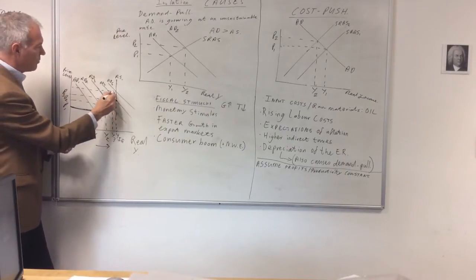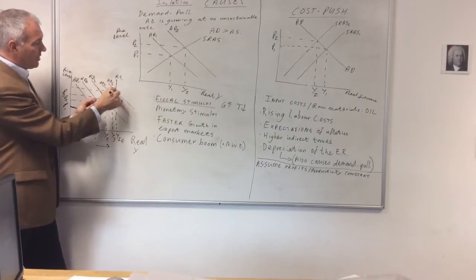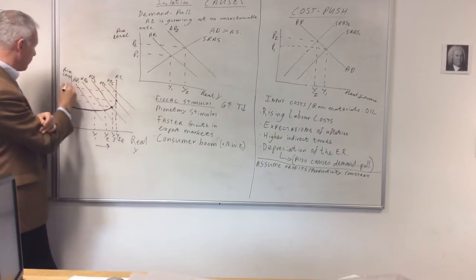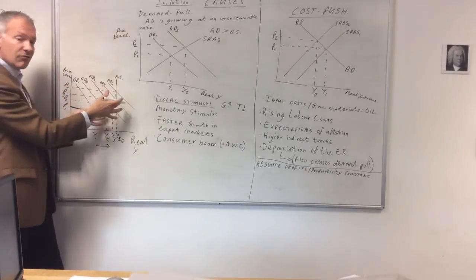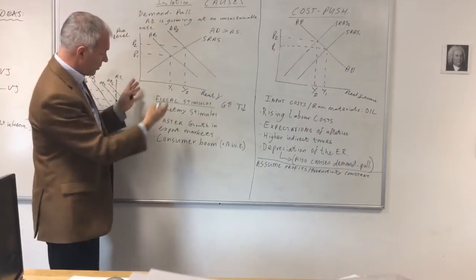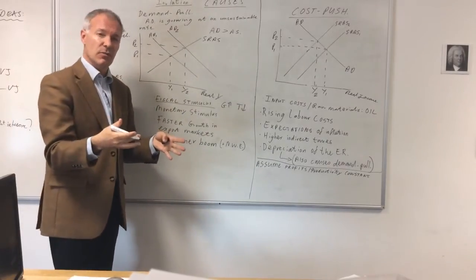If we go from AD4 to AD5, notice the elasticity of supply is perfectly inelastic at this point. Therefore, all we end up with is inflation in the economy. Both these diagrams are useful in explaining demand-pull inflation.